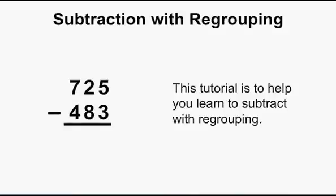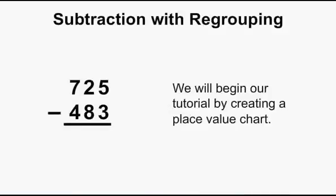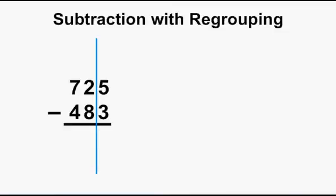This tutorial is to help you learn to subtract with regrouping. We will begin our tutorial by creating a place value chart. We'll add lines to separate our columns, and we'll label the ones column with an O, the tens column with a T, and the hundreds column with an H.